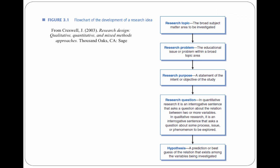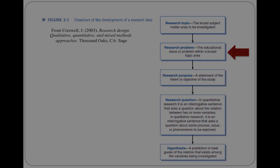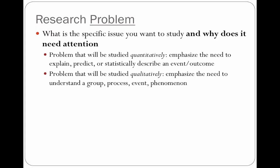Once you identify a general topic area, you should then start to think about what within there you'd like to study. Your next step is to articulate what we call a research problem. This is basically defined as the educational issue or problem within your broad topic area. The research problem is a specific issue you want to study, and in your problem statement — which is at least several paragraphs describing and expanding upon that specific problem — you need to articulate why the issue needs attention.